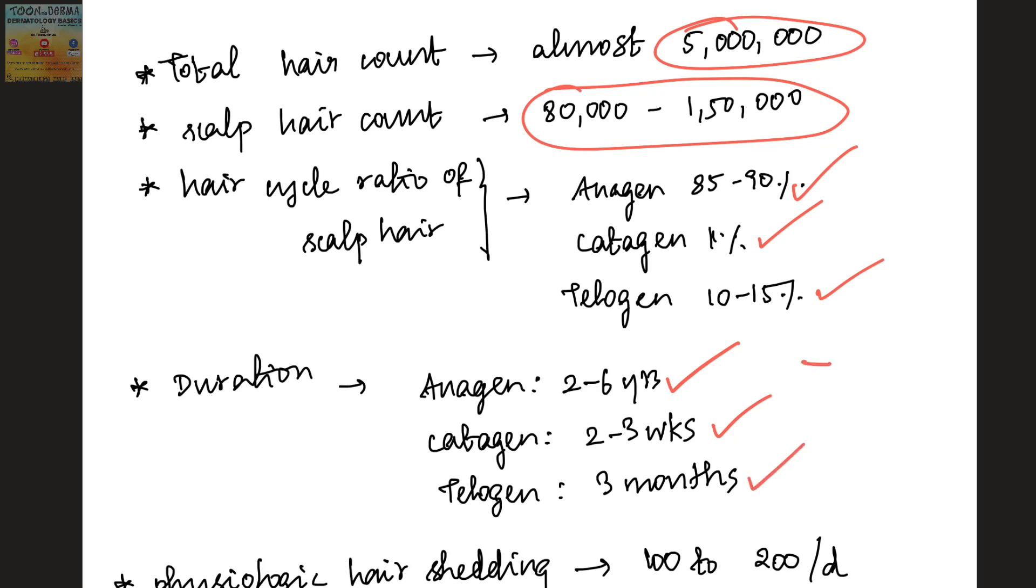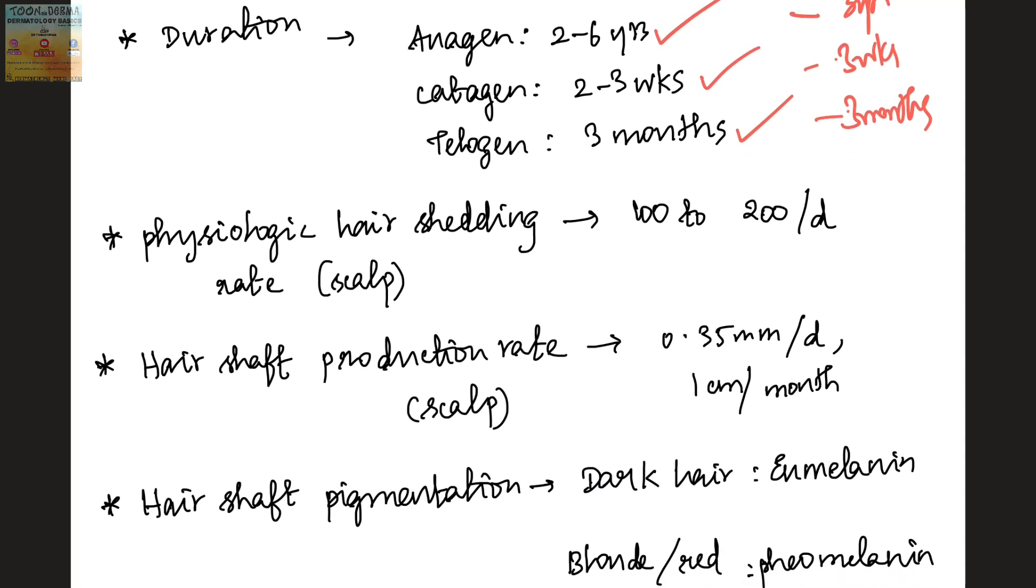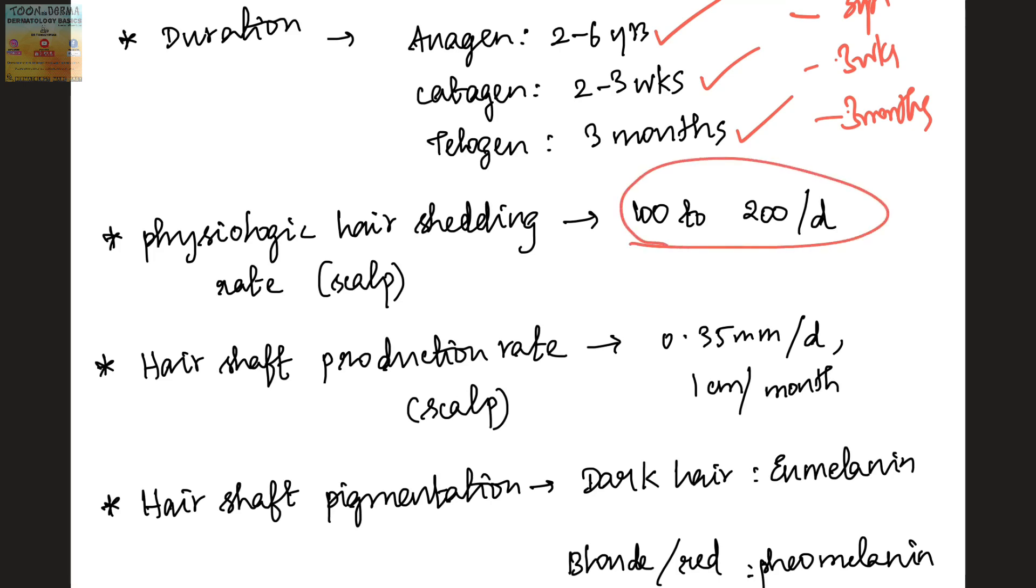You can remember it as anagen phase as 3 years, catagen phase as 3 weeks, and telogen phase for 3 months. The physiological hair shedding per day is around 100 to 200 hairs per day.